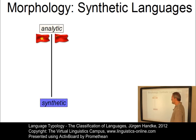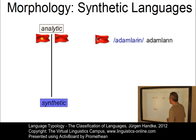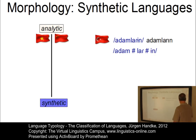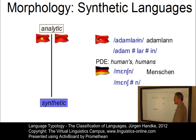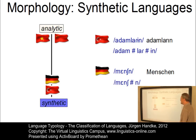Synthetic languages, by contrast, do allow a segmentation of their words into morphs. The first example is from Turkish: 'adamlarin', meaning 'men in the genitive case', consists of three morphs. A second example is from German: 'Menschen' (humans) consists of two morphs. So both languages allow the segmentation of their words into morphs — in other words, they are synthetic.